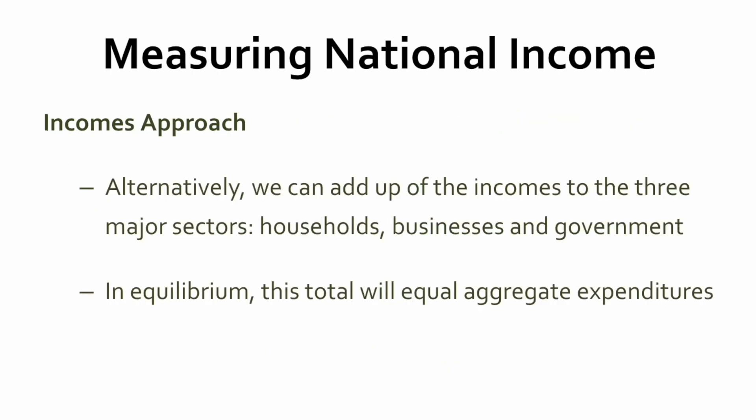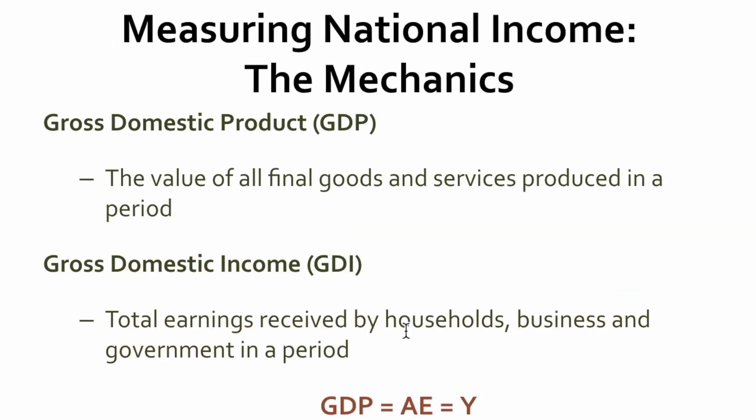So effectively, aggregate expenditure is a total of consumption by households, investments by business, spending by government, and net exports, which is exports minus imports. We can also use another approach called the income approach, which looks at money coming in. Alternatively, we can add up the incomes of the three major sectors — the household sector, the business sector, and the government sector — and in equilibrium, that will match total expenditures. The official terminology used in economics and by the Bank of Canada is gross domestic product. Gross domestic product is the value of all final goods and services produced in a period. Final goods are goods that finally end up in your hands as the consumer — for example, a car itself, not the car radio that gets put into the car. We also have gross domestic income, which is the total earnings received by household businesses and government in a period.